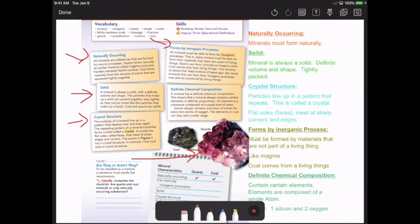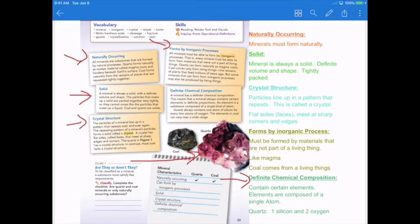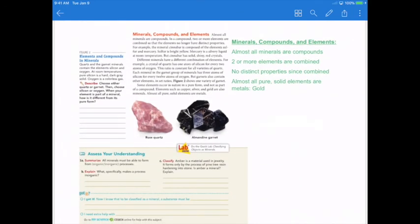They must have a definite chemical composition, which means they contain certain elements. Certain elements are comprised of atoms. So for example, quartz always contains one atom of silicon for every two atoms of oxygen. Always, always has that. So that's a definite chemical composition. Elements in coal vary over a wide range, so they cannot be a mineral. Okay, so let's move on to the next part. Minerals and compounds and elements. Almost all minerals are compounds. Compounds are two or more elements that are combined together. There's no distinct properties since they are combined. Almost all are pure. So solid elements are like metals. Gold, gold's a perfect example.